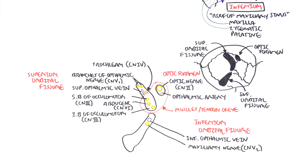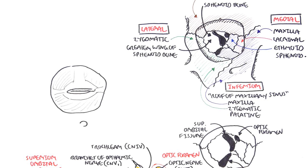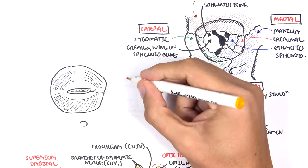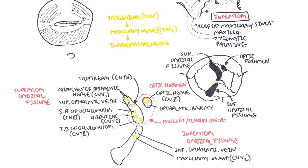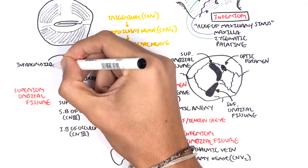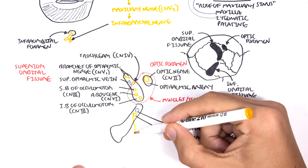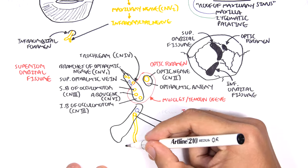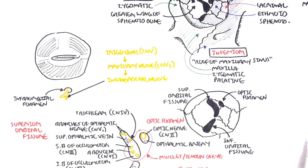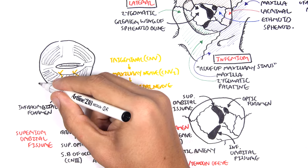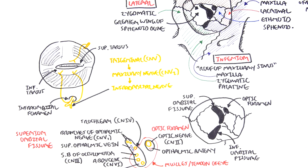Now let's look at the eyelid. The eyelid is composed of muscles innervated by nerves. The trigeminal nerve, cranial nerve five, gives off the maxillary nerve branch V2, which has a branch called the infra-orbital nerve. This nerve passes through the infra-orbital foramen, exits at the lower margin of the orbit, and becomes the infra-orbital nerve, which supplies the inferior tarsus muscles of the eyelid. The superior tarsus is supplied by branches of the supra-trochlear nerve.